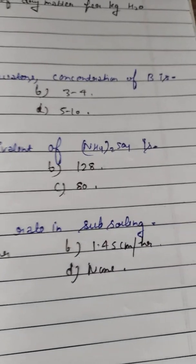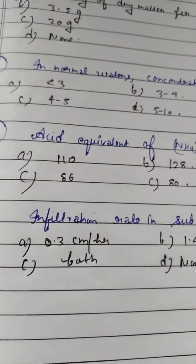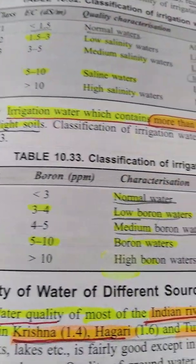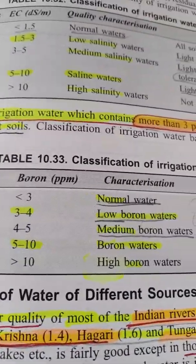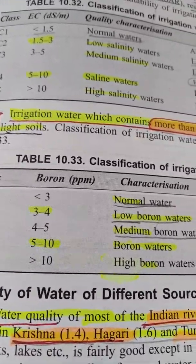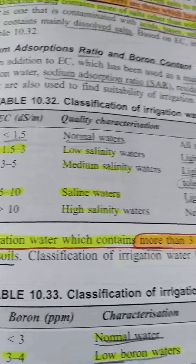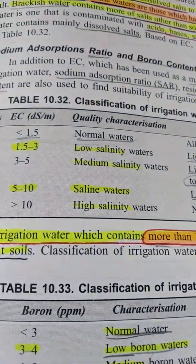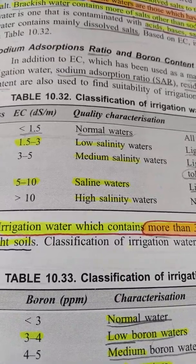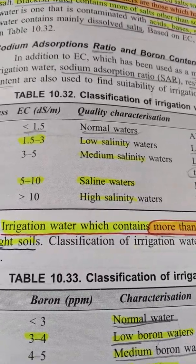Question number 8: In normal water, the concentration of boron is — Option A: less than 3 ppm. Option B: 3 to 4. Option C: 4 to 5. Option D: 5 to 10. In normal water, boron should be less than 3 ppm. Low boron water: 3 to 4; medium boron water: 4 to 5; high boron water: greater than 10; and 5 to 10 is written before high boron water. Also remember EC values: normal water EC less than 1.5; low salinity: 1.5 to 3; medium salinity: 3 to 5; high saline: 5 to 10; highly saline: greater than 10.